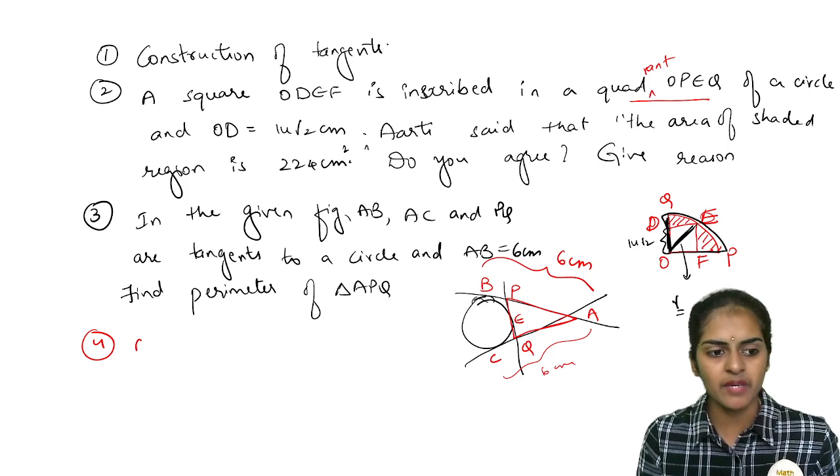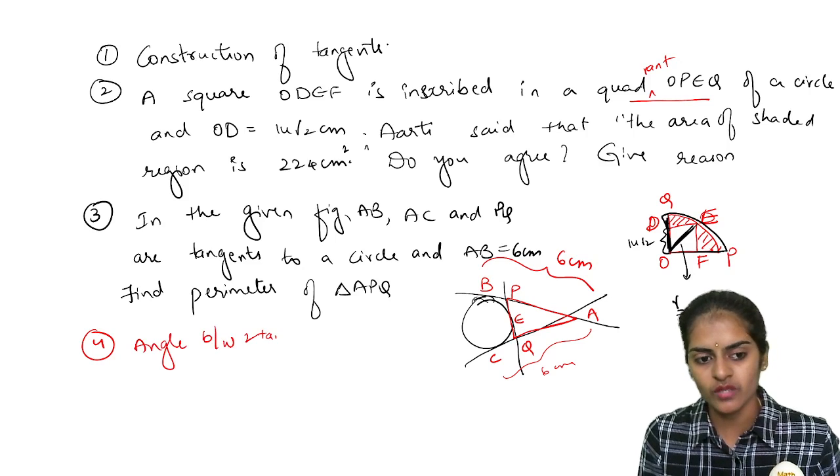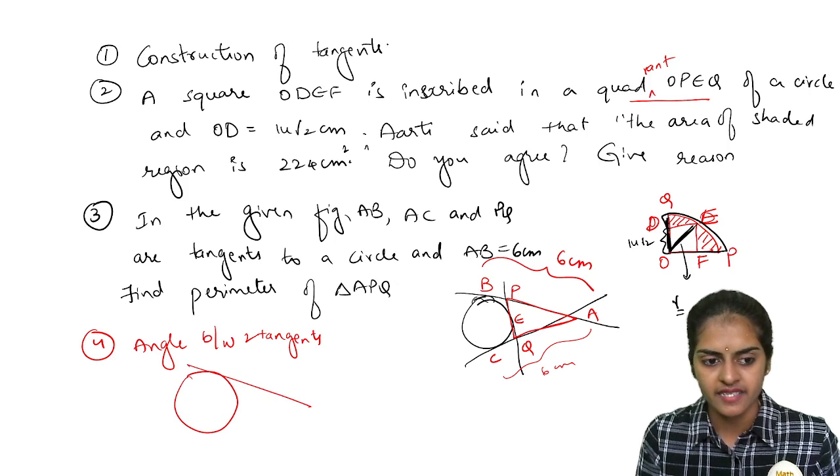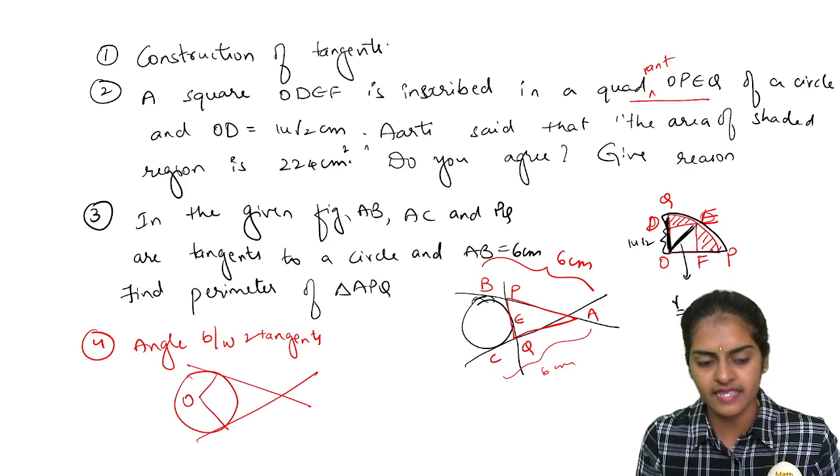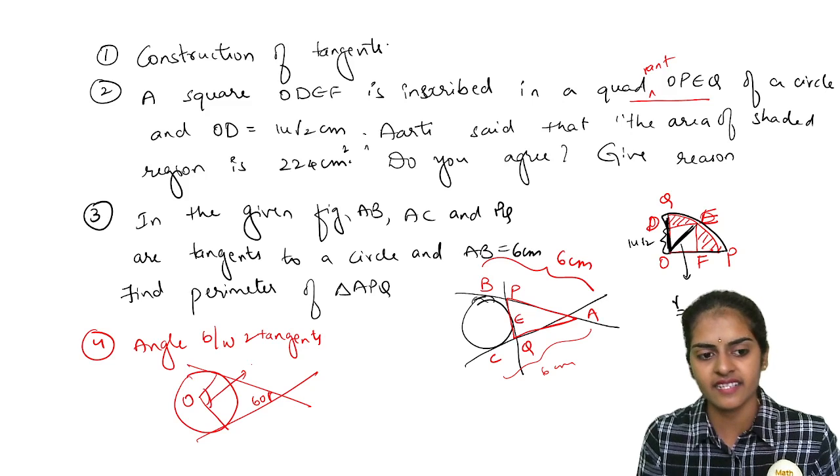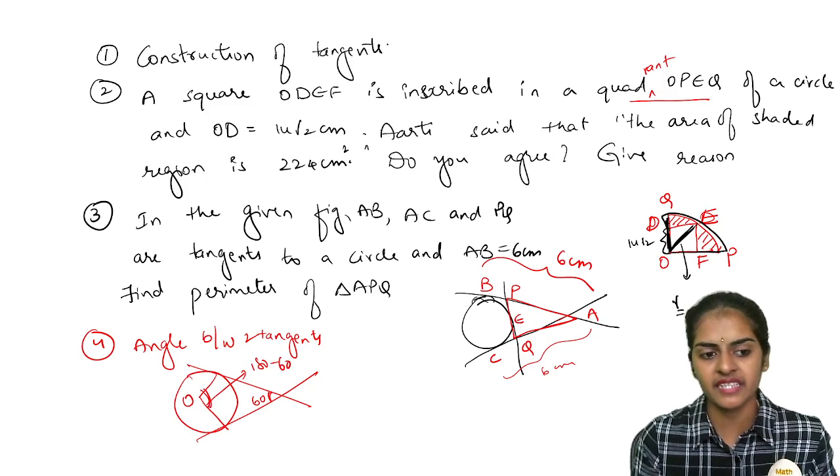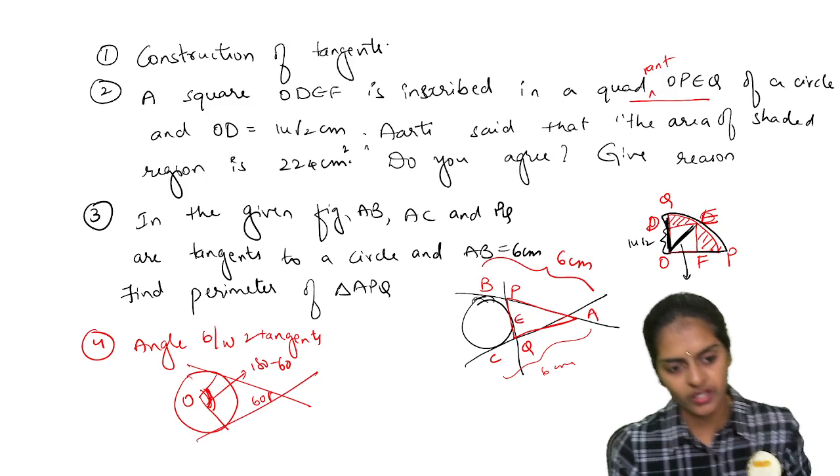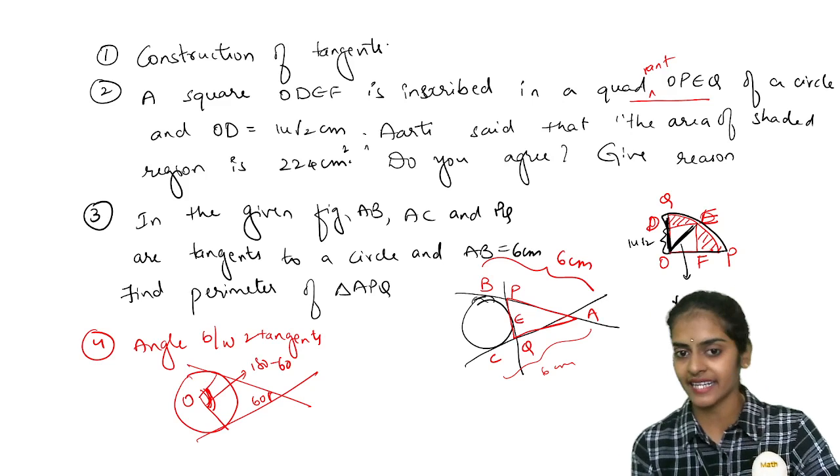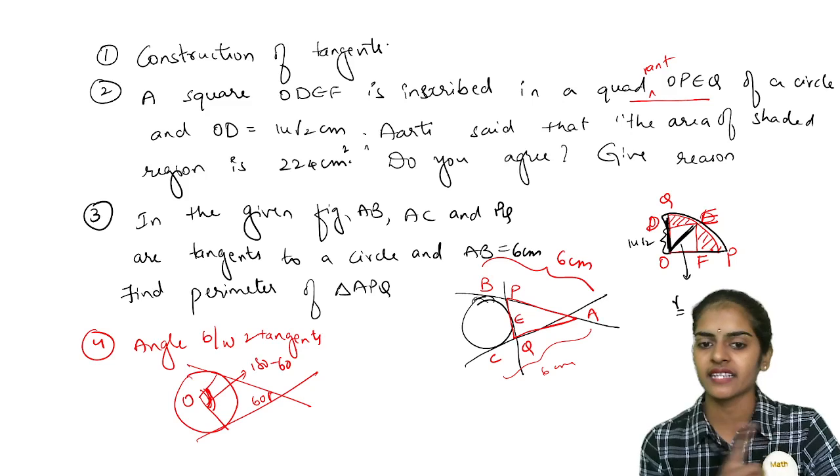Then they may give you angle between two tangents. They may give you angle between two tangents and they will ask you what is the angle between the radii. For example, suppose these are the tangents, these are the radii, centre O. So they will tell this angle is 60. What is this angle? This angle is nothing but 180 minus 60. So angle between the tangents and angle between the radii are supplementary to each other. So like that you will have to subtract it. Suppose if they give you angle between the radii, angle between the tangent will be 180 minus the given angle.